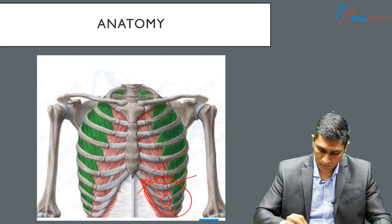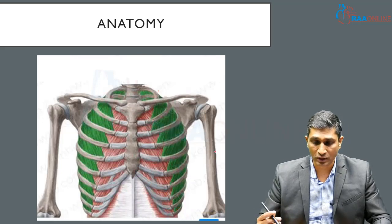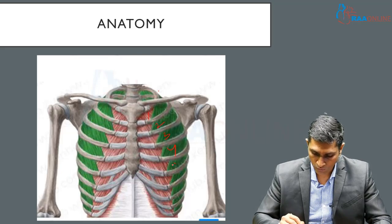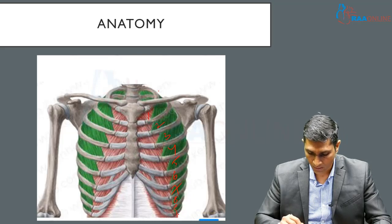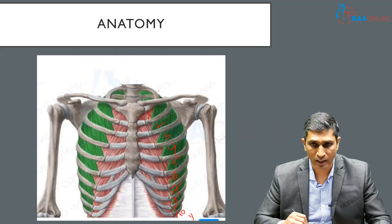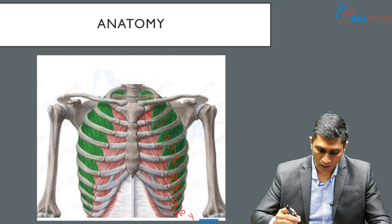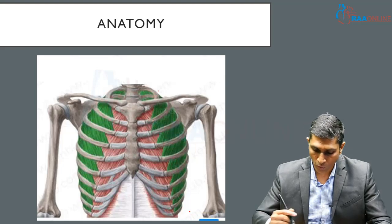When we understand intercostal spaces, there will be 11 pairs of intercostal spaces — from 1 through 11, including those associated with the floating ribs. These intercostal spaces are bounded topographically from external to internal.